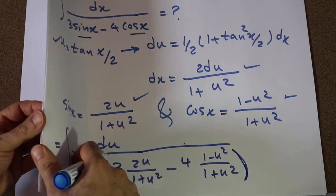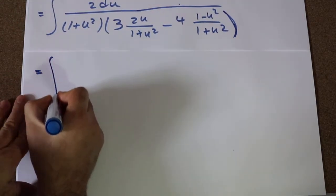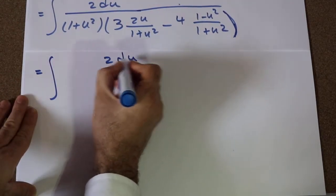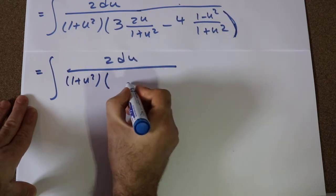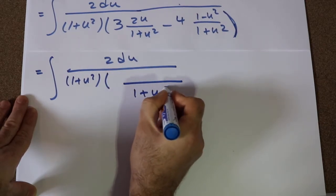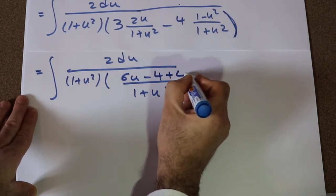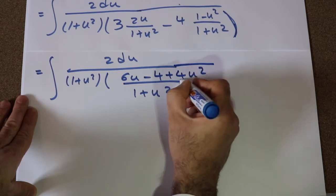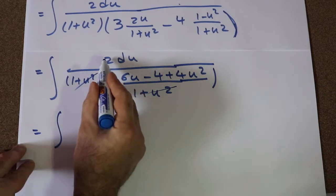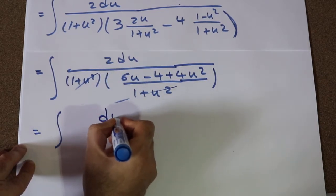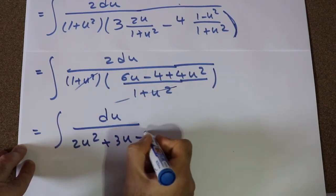Now you need to simplify this expression. This becomes the integral of 2du divided by 1 plus u², times 1 plus u², and the denominator becomes 6u minus 4 plus 4u². The 1 plus u² cancels out, and dividing everything by 2 gives du divided by 2u² plus 3u minus 2.